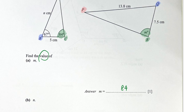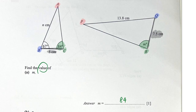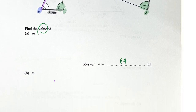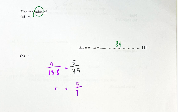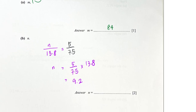For n, we look at the corresponding sides. B to C corresponds to Q to R, and A to B — where n is — corresponds to P to Q. For similar triangles the ratios of sides are equal, so n over 13.8 equals 5 over 7.5. Multiplying both sides by 13.8 gives n equals 9.2 cm.